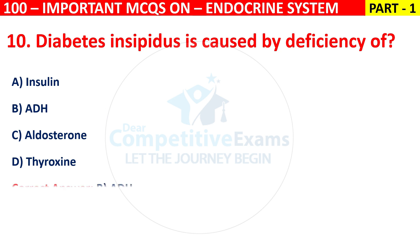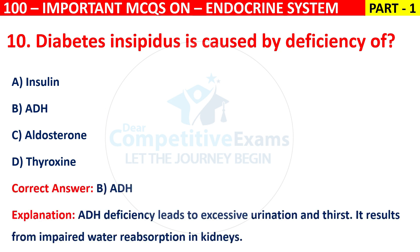The right answer is B, that is ADH. ADH deficiency leads to excess urination and thirst. It results from impaired water reabsorption in the kidneys.